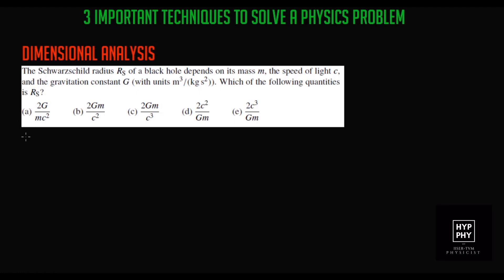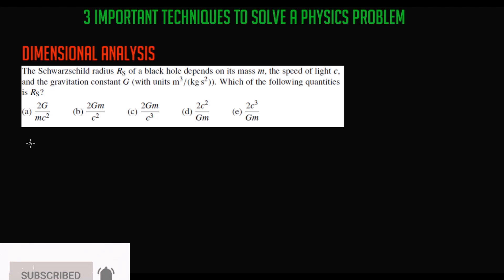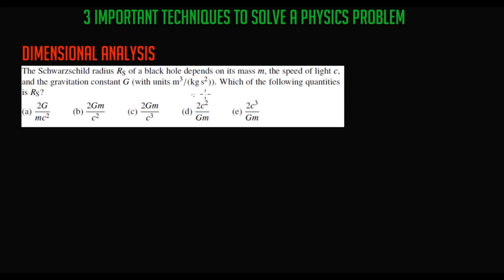The first method I'm going to discuss is a very powerful technique known as dimensional analysis. The question given here: the Schwarzschild radius RS of a black hole depends on its mass M, the speed of light C, and the gravitational constant G, whose units are given as meter cubed per kilogram second squared.